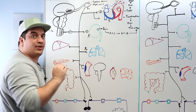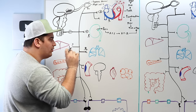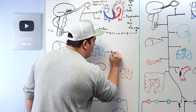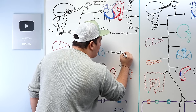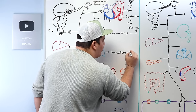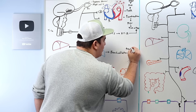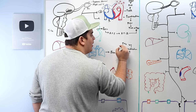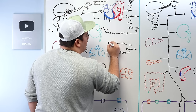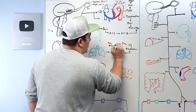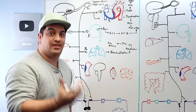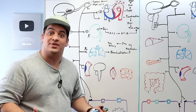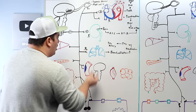Beta-2 receptors in the lungs cause bronchodilation, increasing ventilation and oxygen supply. That increased oxygen delivery to tissues enables more ATP production, which is needed for muscle contraction and action potentials in the central nervous system. In a fight-or-flight situation, we need not only oxygen and good perfusion but also energy — glucose.